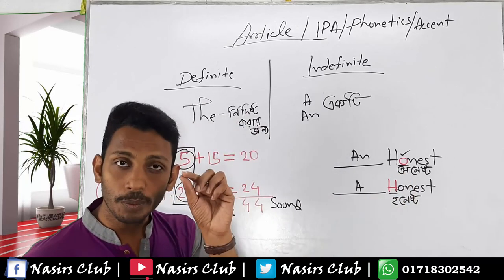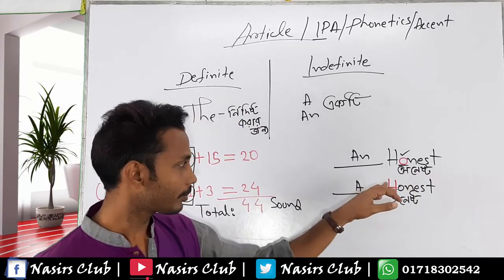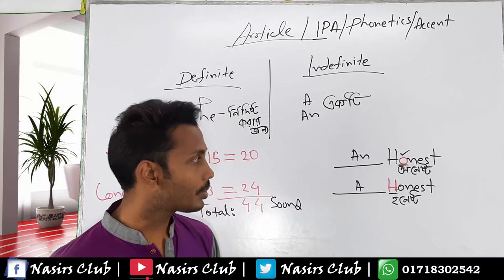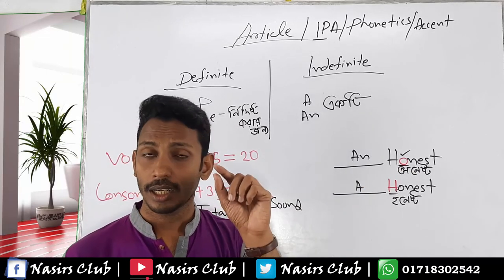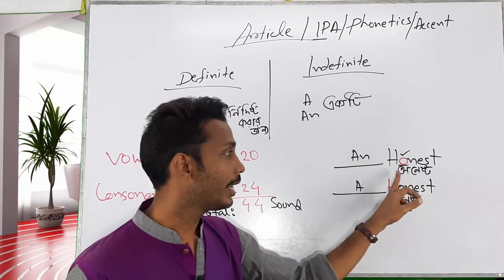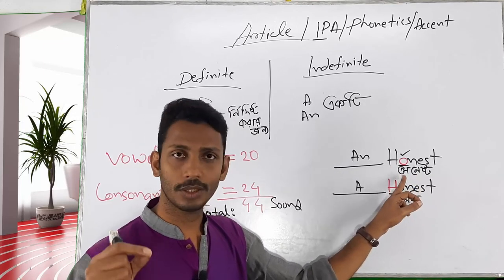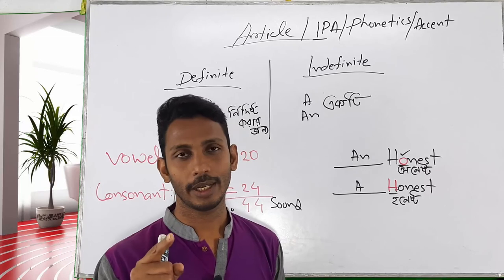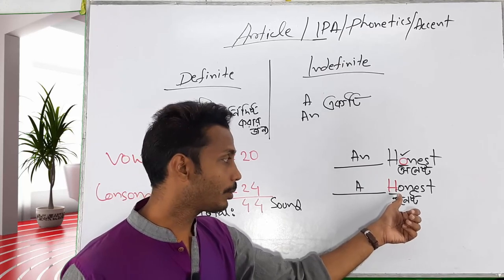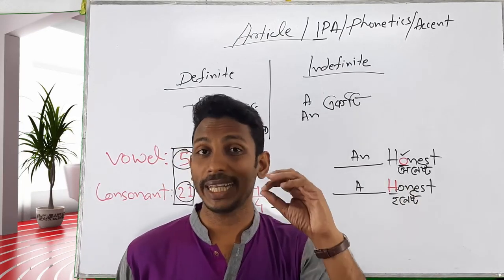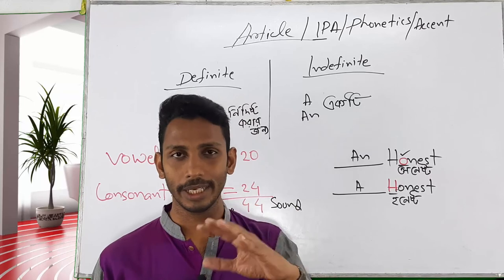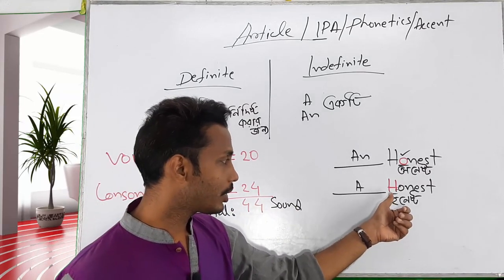We are working with sound. We are working with 'honest.' We have to look at the vowel sound. When the vowel sound is present, we use 'an.' For example, 'honest' — the sound of the word begins with an 'N' sound, not an 'H' sound. So 'an honest' is correct. Many words follow this same term, meaning the sound starts with a vowel sound.